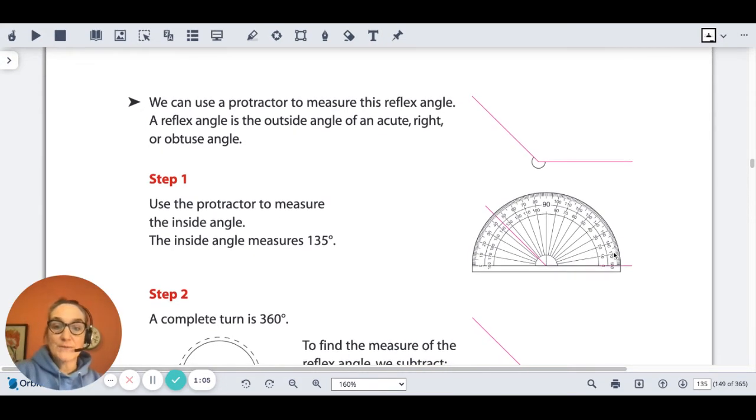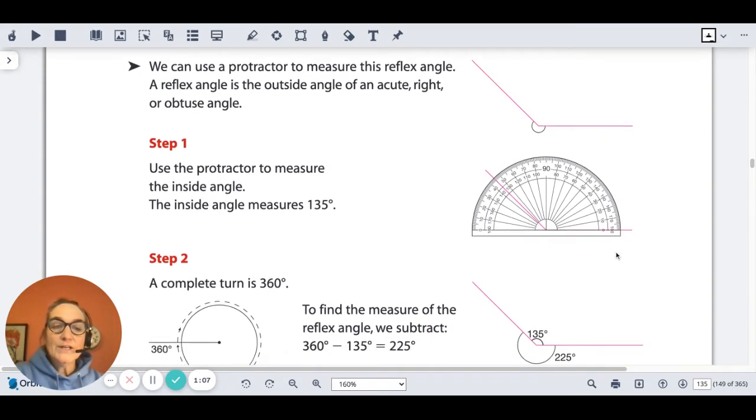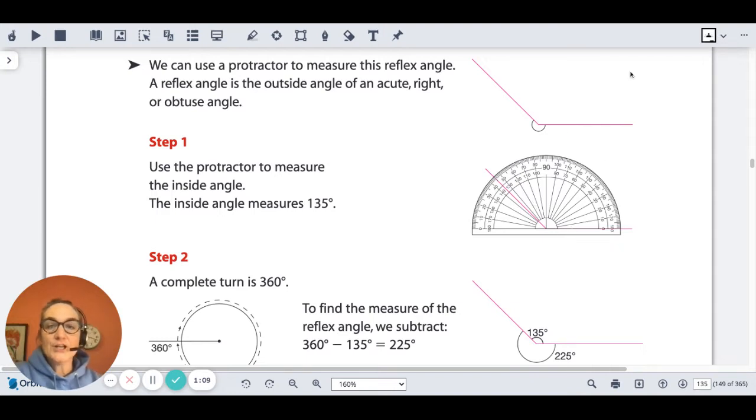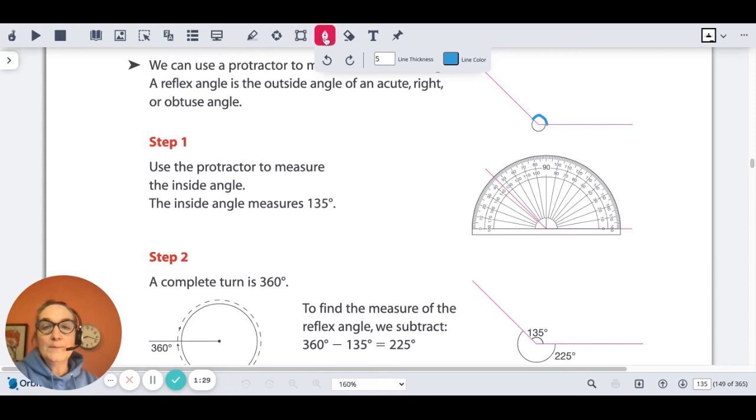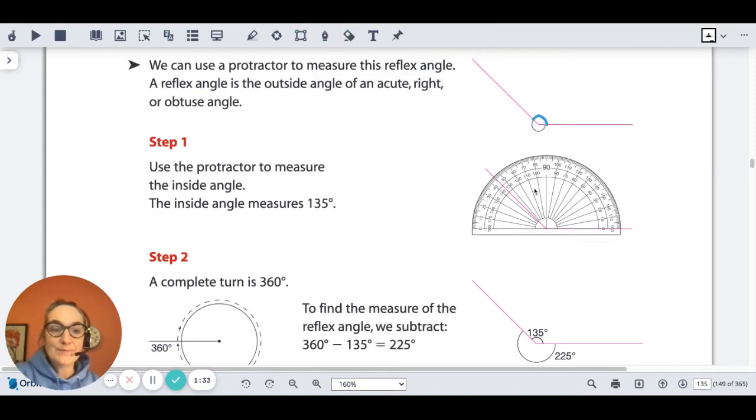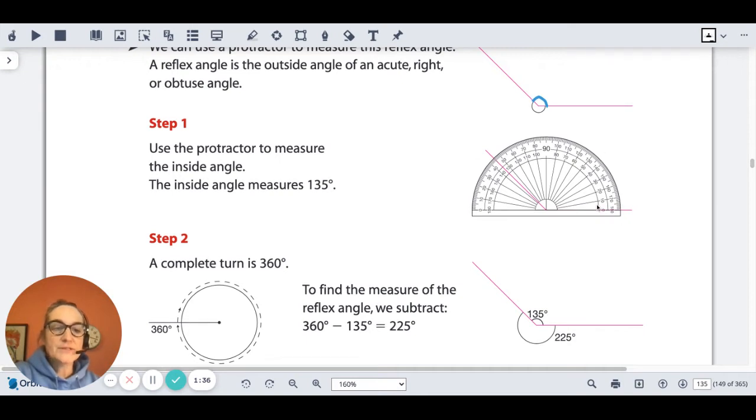What we do is we measure the opposite angle. We are not going to measure the angle that we're being asked to measure, but we're going to measure the opposite angle. You can see I've outlined that angle in blue, so the illustration shows the protractor on top of the angle.